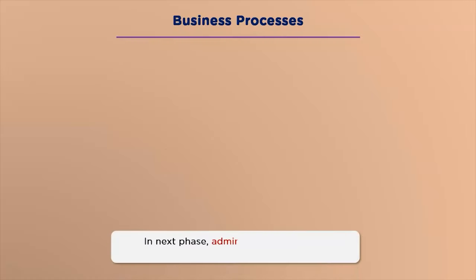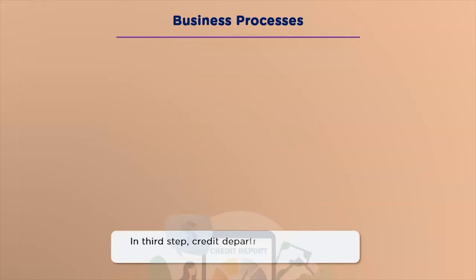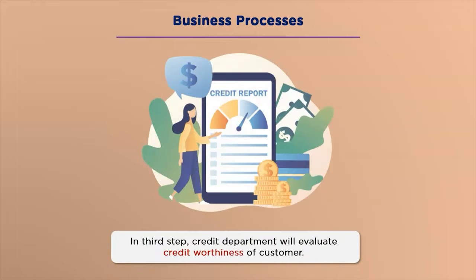In the next phase, the administrative team evaluates all documents submitted by the customer and forwards them to the credit analysis team. The credit department receives the application and analyzes it for accuracy, genuineness, and completeness. If required fields are missing, the application is returned to the borrower or credit analyst to obtain the missing information. The credit team uses a loan origination system (LOS) to determine the borrower's creditworthiness.